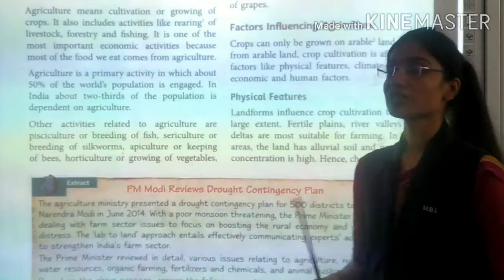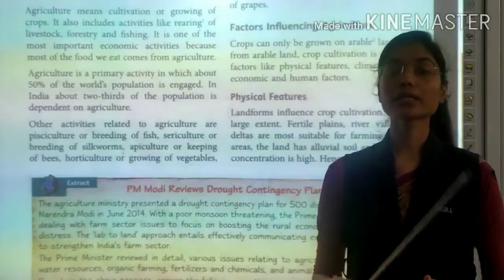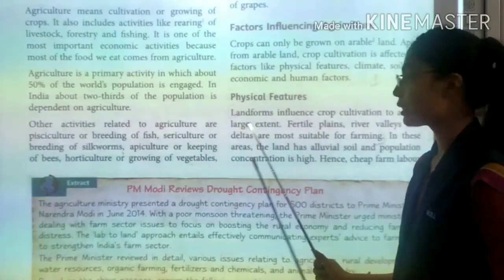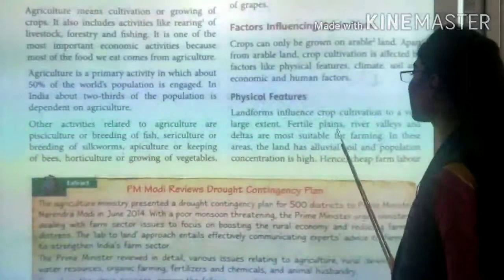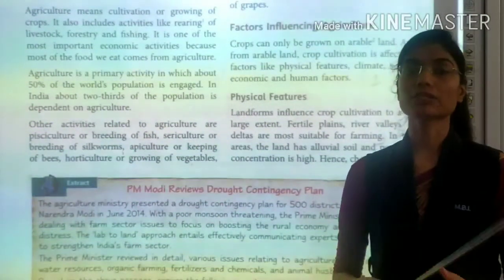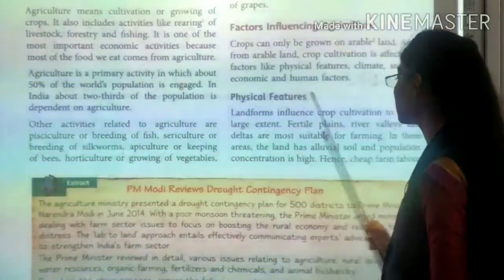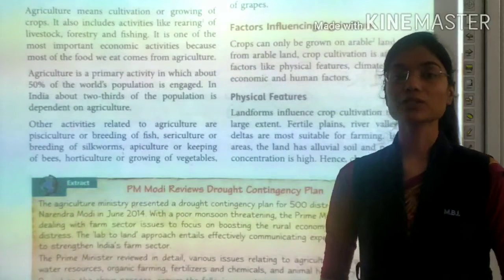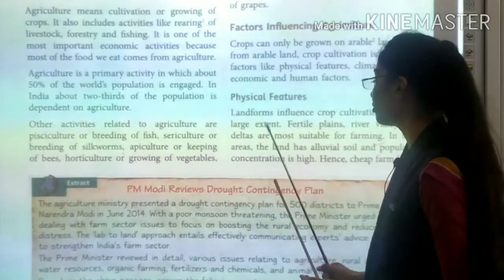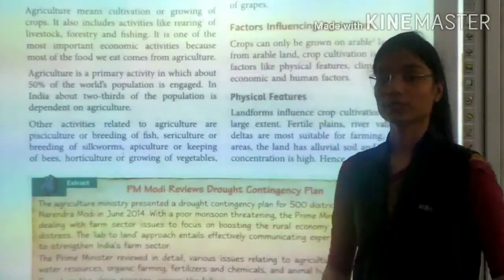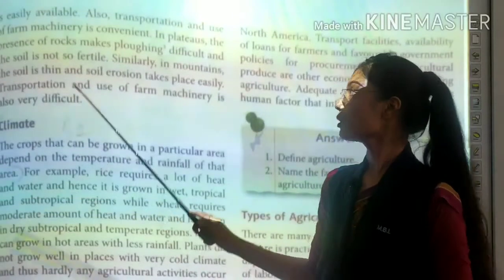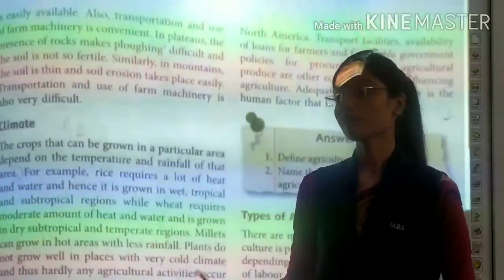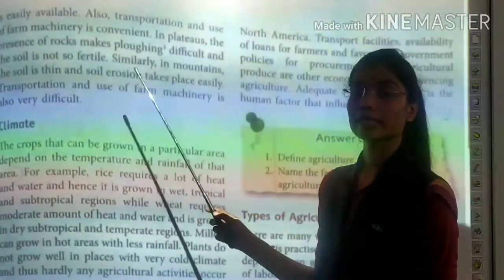The first factor is physical features, meaning the landforms of our earth. Landform influences crop cultivation to a very large extent. Fertile plains, river valleys and deltas are most suitable for farming. In these areas the land has alluvial soil and population concentration is high, making cheap labor easily available. Transportation and use of farm machinery is also convenient because the land is plain.